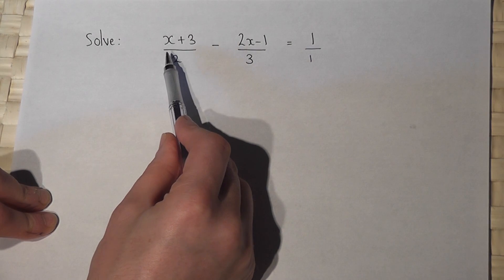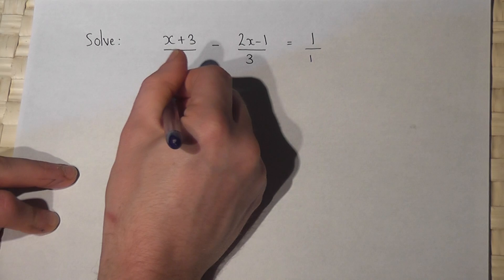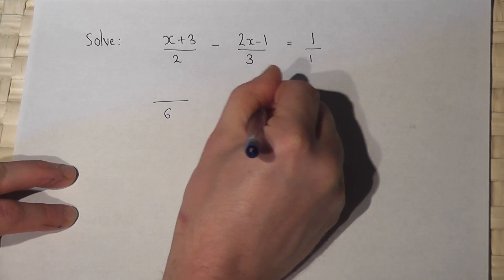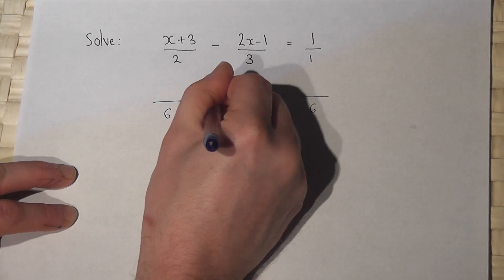And then look for the number which two, three, and one all go into. Well that's six. So over six, over six equals over six, with a minus sign there.